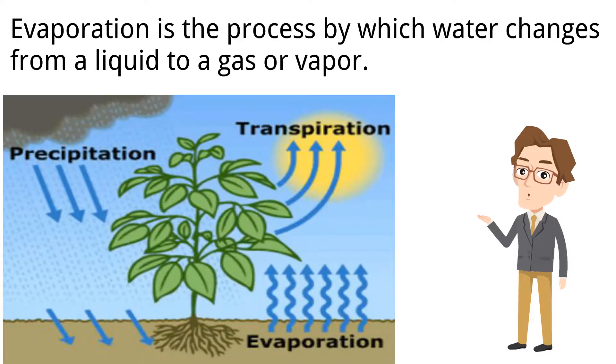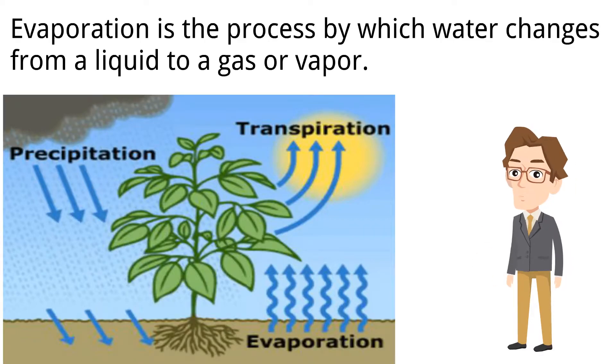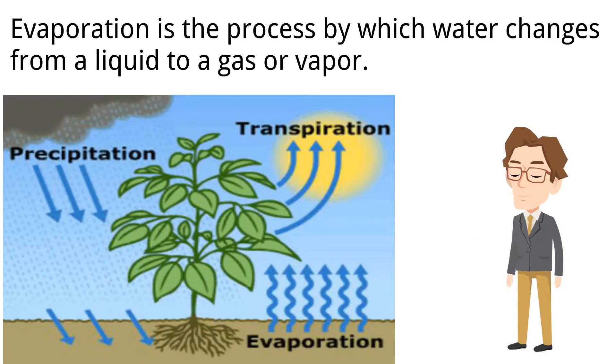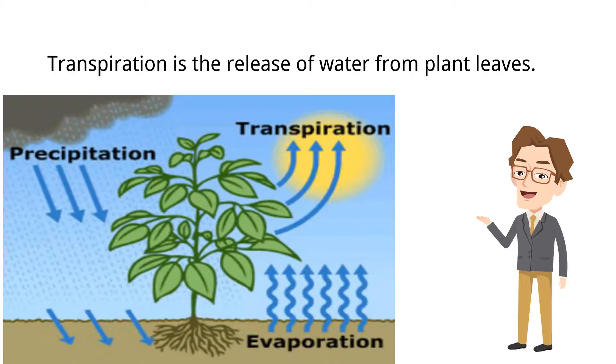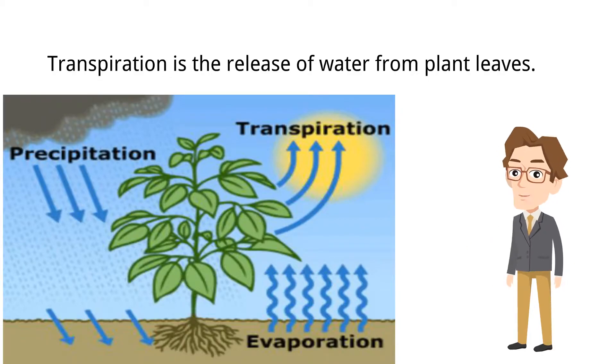Evaporation is the process by which water changes from a liquid to a gas or vapor. Transpiration is the release of water from plant leaves.